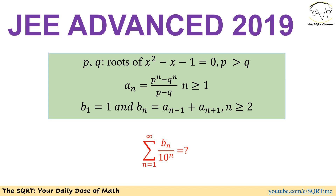Based on all we have here, we need to find the sigma of Bₙ over 10 to the power of n, for n starting from 1 up to infinity.